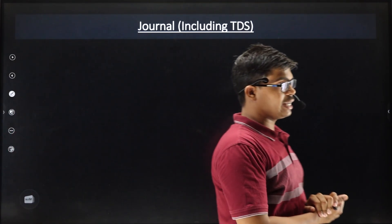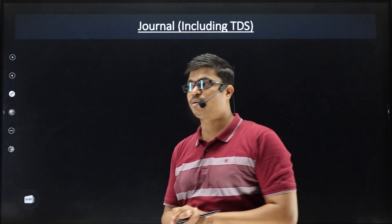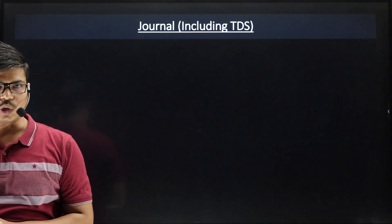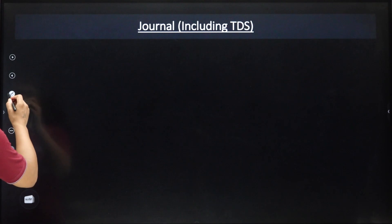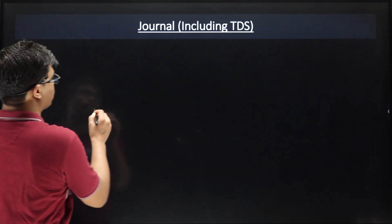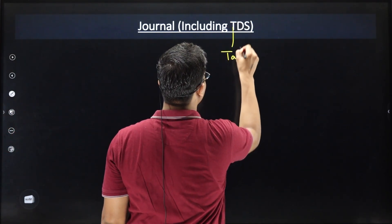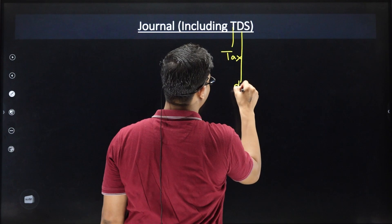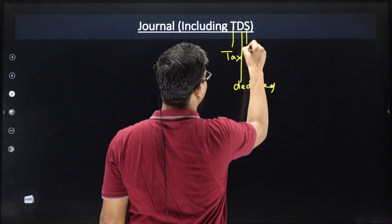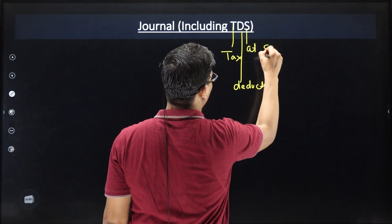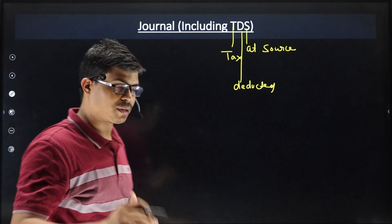Now let's see the journal entry with TDS. Last year TDS was not included, but this year TDS will be studied. What is TDS? TDS means Tax Deducted at Source.